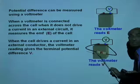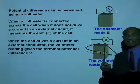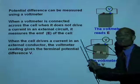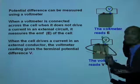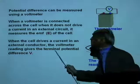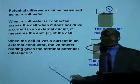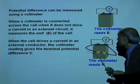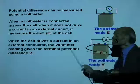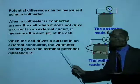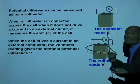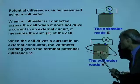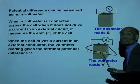When the cell drives a current in an external resistor, the voltmeter reading will now be less than the EMF. We call this the terminal potential difference — the potential difference between the ends of the resistor. This terminal potential difference V, which is less than E, measures the potential difference across the external resistor.